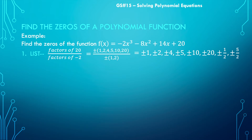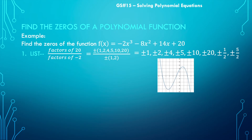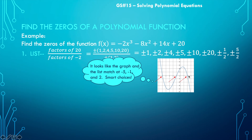That's why looking at a graph helps us make smart choices — sometimes when there are lots of possibilities, we don't want to spend a lot of time on synthetic division. Looking at this graph for x-intercepts, it looks like we might have one at negative 5, which is on our list, negative 1, also on our list, and positive 2, also on our list. So negative 5, negative 1, and positive 2 look like smart choices.